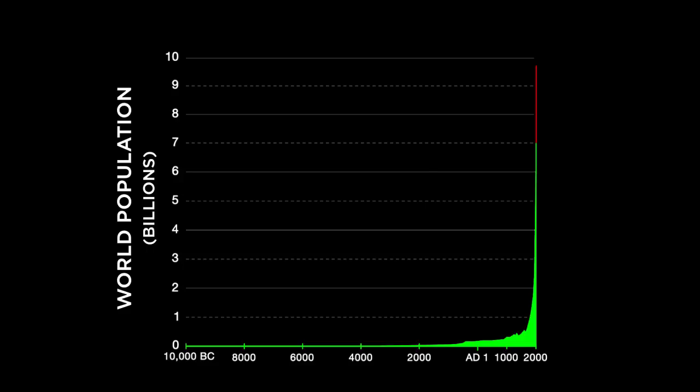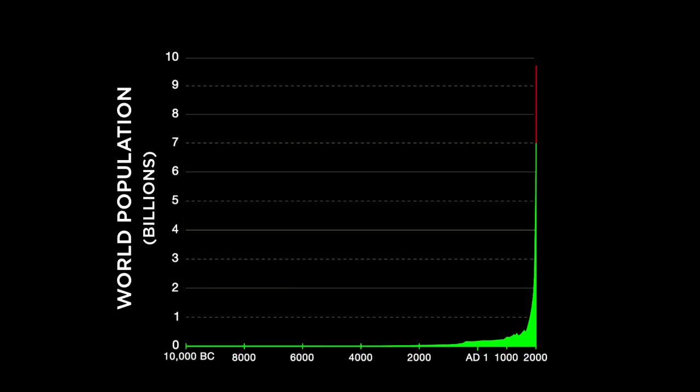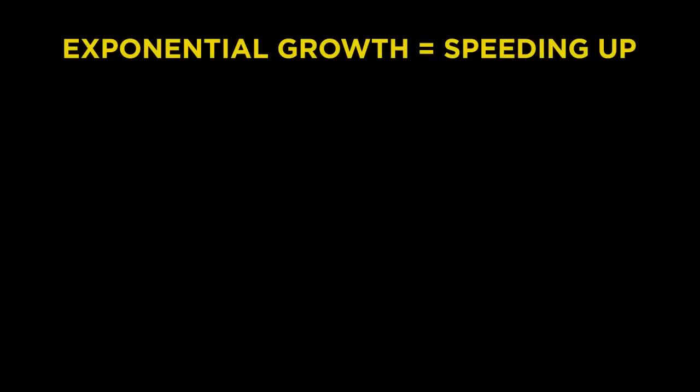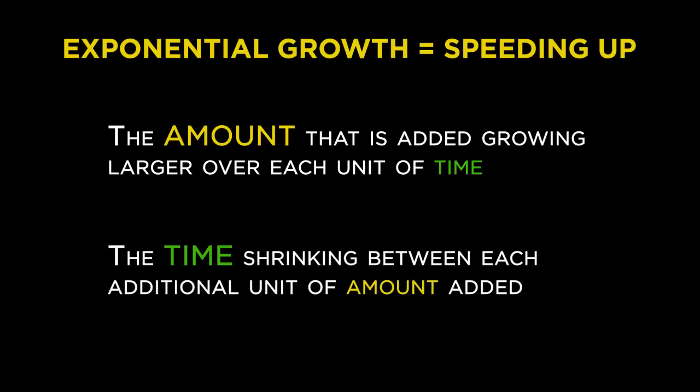For example, the total carrying capacity of the Earth for humans is thought to be somewhere in this zone, give or take a few billion. Because of this, the turn-the-corner stage is very real and of immense importance to us, and not an artifact of graphical trickery. The critical takeaway for exponential functions relates to the concept of speeding up. You can think of the key feature of exponential growth either as the amount that is added growing larger over each additional unit of time, or as the time shrinking between each additional unit of the amount that is added. Either way, the theme is speeding up.